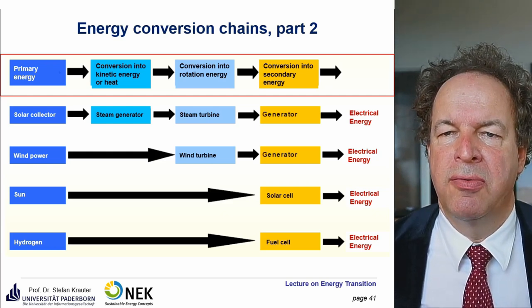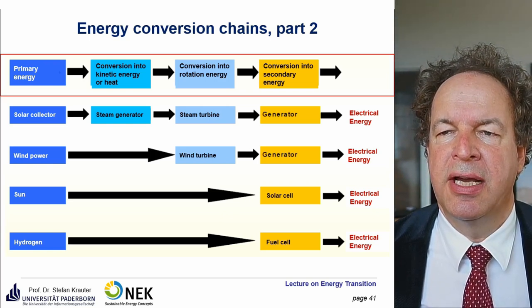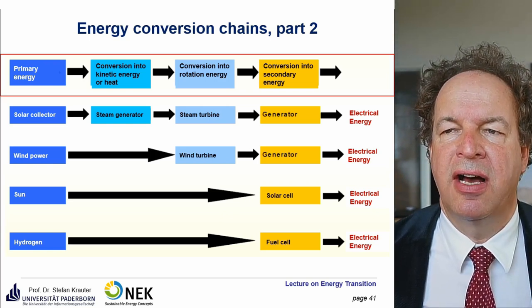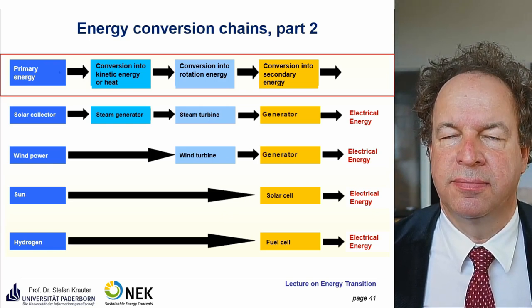We can also have even more direct conversion if we convert sunlight directly into electricity via the photovoltaic principle in a solar cell. Also, we can use hydrogen to convert it into electrical energy via a fuel cell.